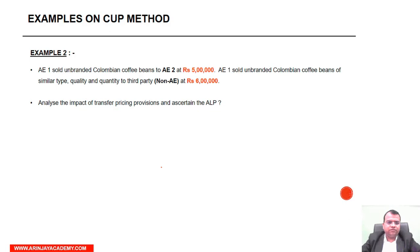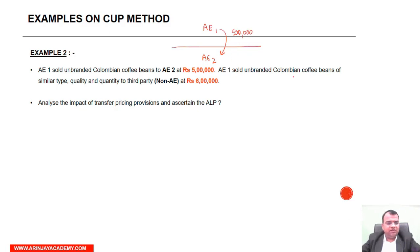Example 2: AE-1 sold unbranded Colombian coffee beans to AE-2 for rupees 5 lakh — same parties, same amount. But AE-1 sold these same beans of similar type, quality and quantity to a third party at rupees 6 lakh.